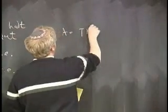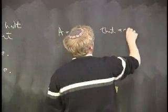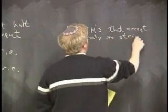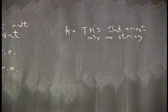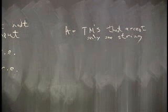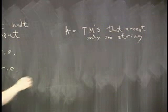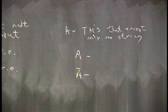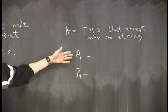How about this? A equals Turing machines that accept only one string. Some Turing machines accept only one thing and reject everything else or infinite loop on everything else. But there's only one string that it's going to accept. So I want to know about A and I want to know about A complement.